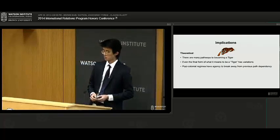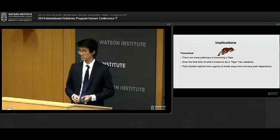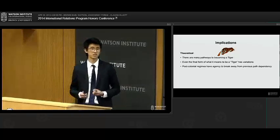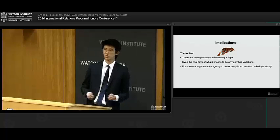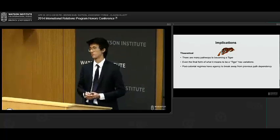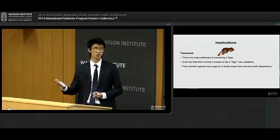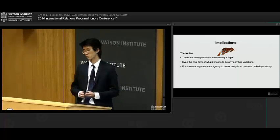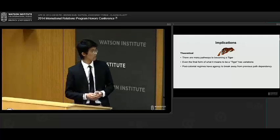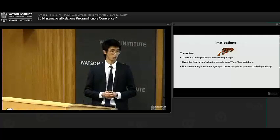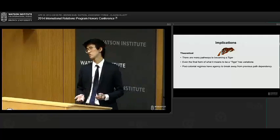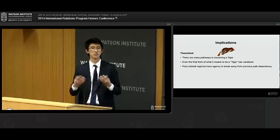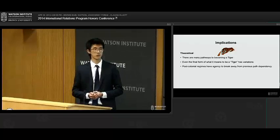And third, post-colonial regimes have agency to break away from previous path dependency. So if the British left you with something that was not favorable for growth, Singapore showed that they were able to disrupt, to move away, to break away from it. If colonial Japan left Taiwan or Korea with something that was also not preferential, they were also able to break away from it.